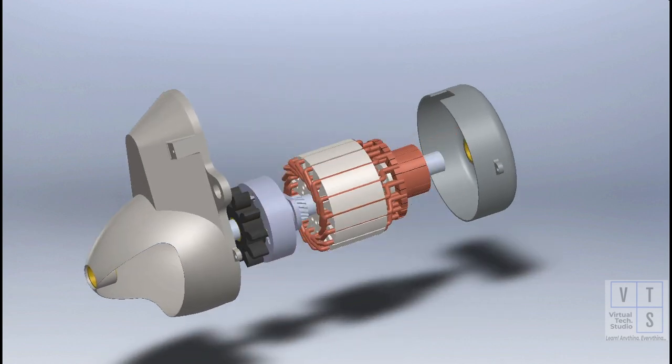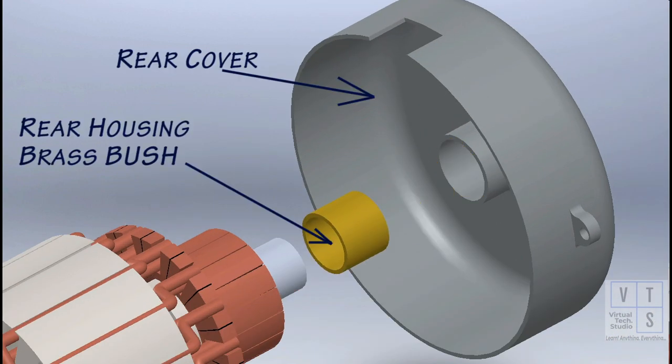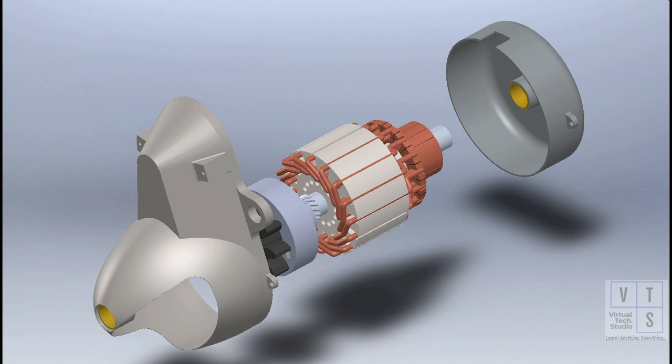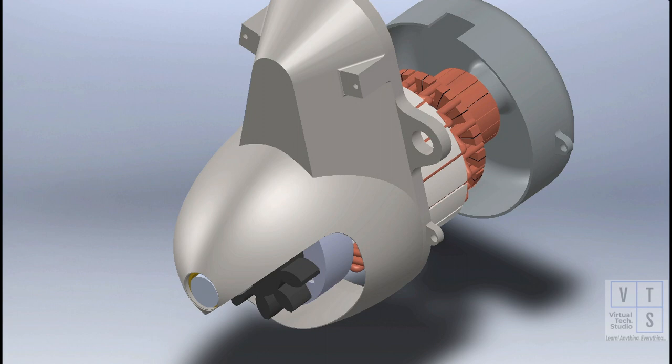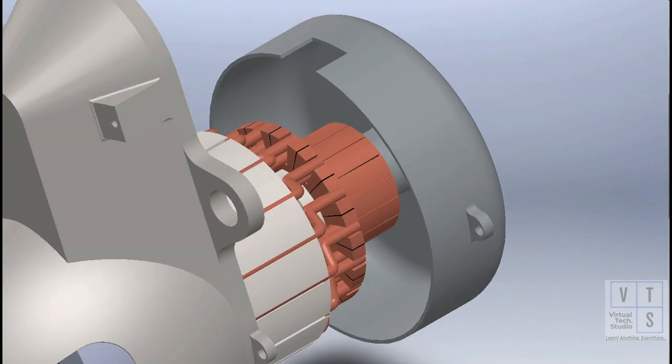Shaft is supported at either end with the help of brass bushes. Rock the front and rear housings back and forth. If the play is too much, the bushes have been worn out and new bushes are to be installed.